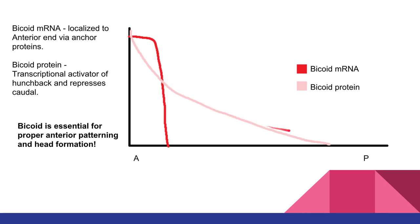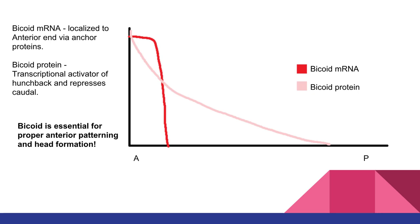Because bicoid protein is not localized via anchor proteins like the mRNAs, you get a nice gradation. The pink represents the protein forming a gradation — very high concentration at the anterior end and quite a low concentration at the posterior end. We really need bicoid for anterior patterning and proper head formation.